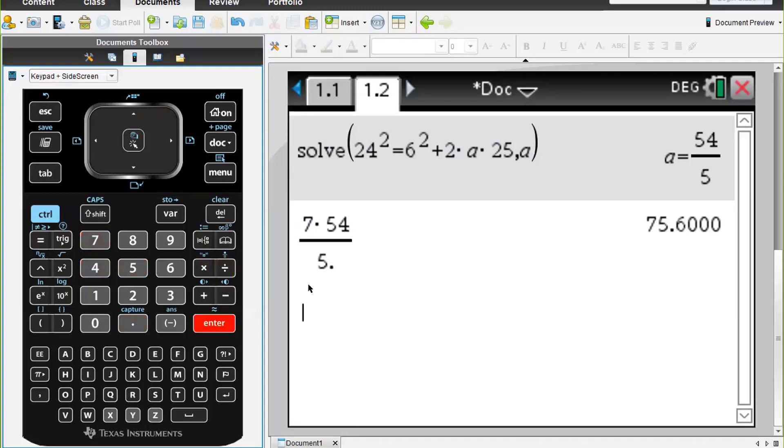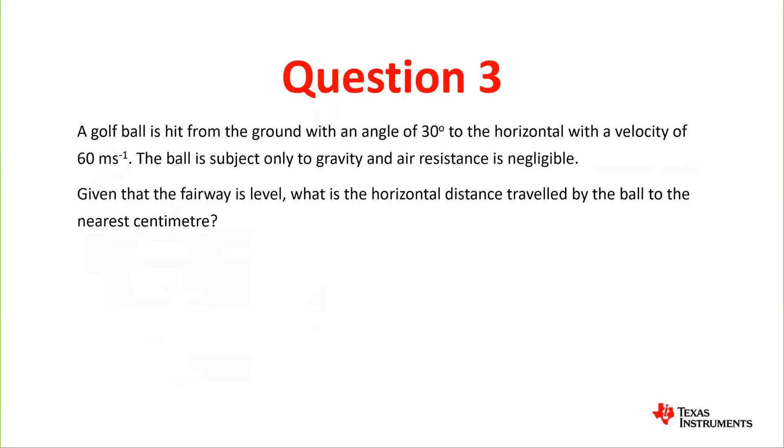Question three: A golf ball is hit from the ground with an angle of 30 degrees to the horizontal with a velocity of 60 meters per second. The ball is subject only to gravity and air resistance is negligible. Given that the fairway is level, what is the horizontal distance traveled by the ball to the nearest centimeter?